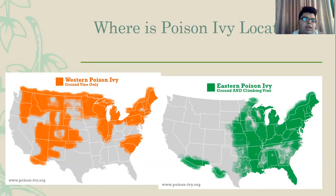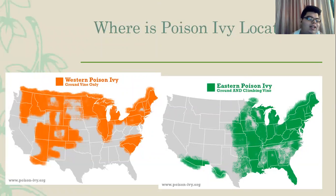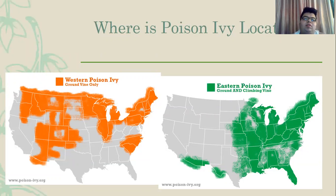Poison Ivy is only allergic to us humans. Other animals, like the pig or the deer, are totally okay with it — the deer can even eat it. It's only us humans that are affected, because of the oil that excretes from the Poison Ivy.